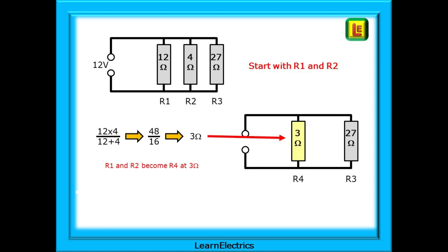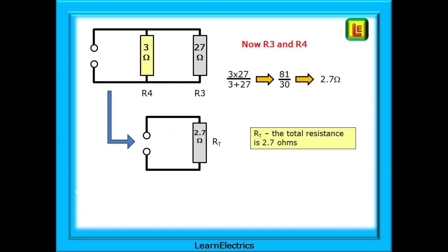Let's do this example. Three parallel resistors, 12 ohms, 4 ohms, and 27 ohms. What is the total resistance? Start with R1 and R2. So 12 multiplied by 4 is 48. That's the top row. 12 plus 4 is 16 for the bottom row. We have 48 divided by 16, which is 3 ohms. So R1 and R2 can be replaced with a 3 ohm resistor, which we will call R4. We are now left with just two resistors, 3 ohms and 27 ohms. Repeat the same MAD calculation. 3 multiplied by 27 is 81. 3 added to 27 is 30. And 81 divided by 30 is 2.7. RT, the total resistance, is 2.7 ohms.